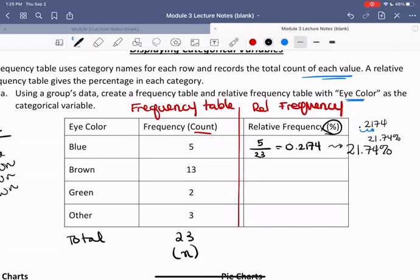So just to recap, that means 21.74% of the people in my study had blue eyes. So now I'll let you pause the video and compute each of the percentages or relative frequency of the remaining three categories.